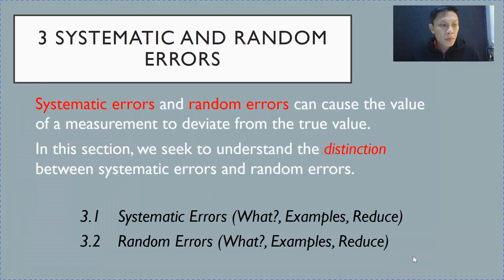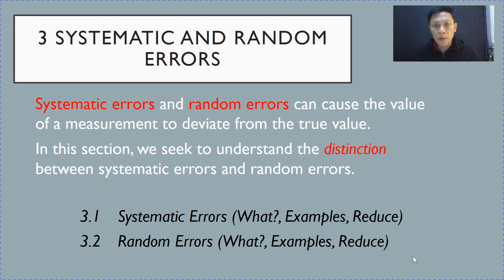Hello everyone. In this next section, we will look at two types of errors: systematic and random errors. In this section, we will seek to understand how to make the distinction between these two types of error.